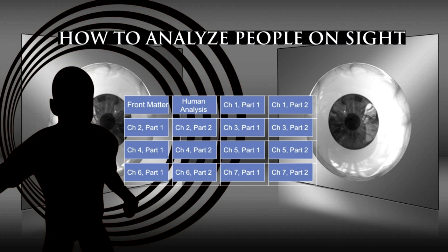How to Analyse People on Sight Through the Science of Human Analysis: The Five Human Types by Elsie Lincoln Benedict and Ralph Payne Benedict. Printed and bound by the Roycrofters at their shops in East Aurora, New York. Copyright 1921 by Elsie Lincoln Benedict and Ralph Payne Benedict. All rights reserved.